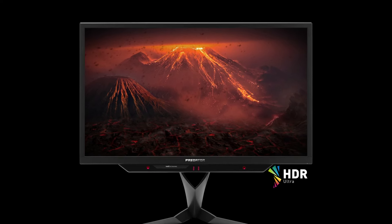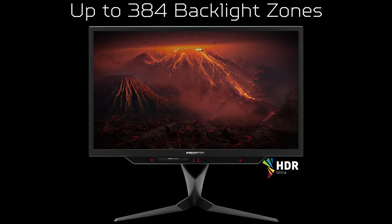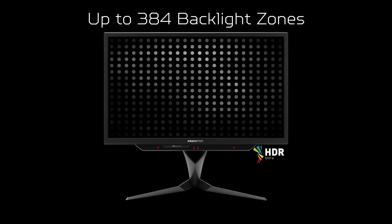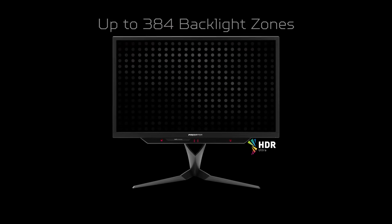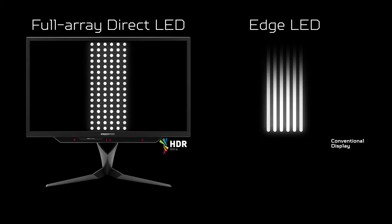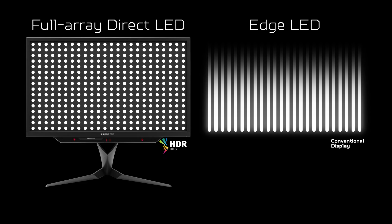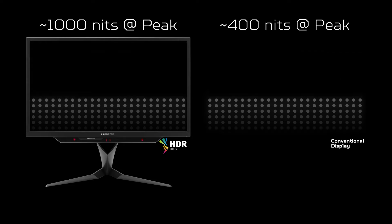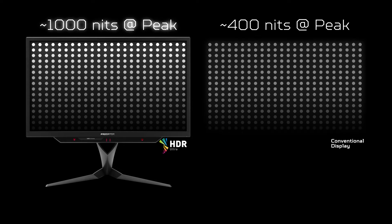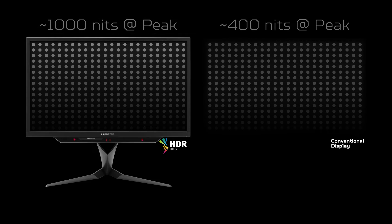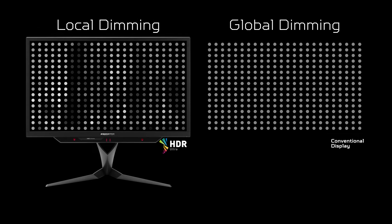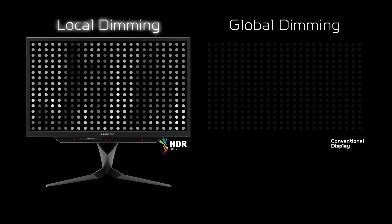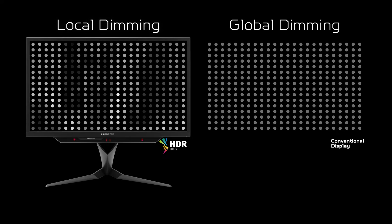HDR Ultra utilizes 384 backlight zones, far more than other forms of HDR. These essential zones evenly distribute light across the entire display. With brightness at up to 1000 nits, HDR Ultra shows deeper levels of contrast between light and dark. Local dimming goes further, displaying brightness where needed for the most realistic image possible.